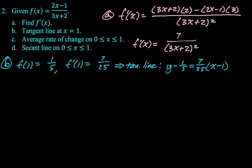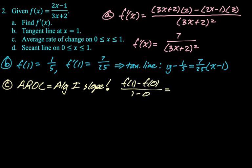Alright, part C, average rate of change. Average rate of change is algebra 1 slope. You've got to say that to yourself a lot. That's going to come up a lot in this course. So average rate of change is algebra 1 slope. So all I have to really find is f of 1 minus f of 0 over 1 minus 0. I'm going to plug in, I already know what f of 1 is from the previous part. f of 0, you just get negative 1 half, and then over 1 minus 0, and then that simplifies to 7 tenths. That's our average rate of change.